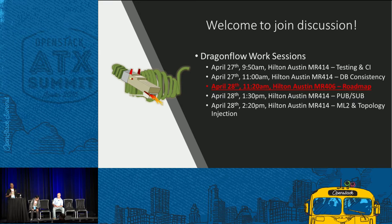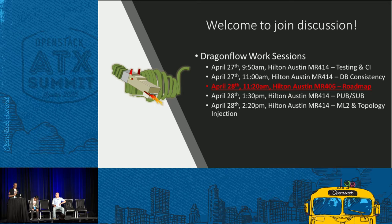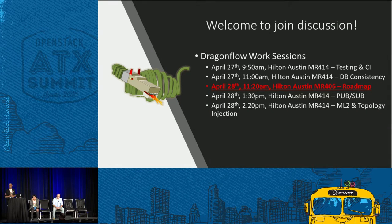We have work sessions tomorrow. We're going to talk about publish-subscribe next phase — currently we support only the Neutron server as publisher, but next step will be publishers from the compute nodes as well, so it's multiple publishers and multiple subscribers from the compute nodes themselves. We're also going to talk about SFC and service chaining. If anyone has questions, we'll be happy to answer.